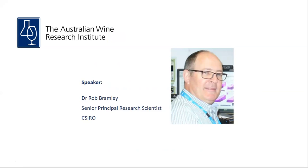Rob has worked as a soil chemist on land use sustainability issues and since 1996 has had a primary research focus on precision agriculture and the management of variability in agricultural production systems for economic and environmental benefits. Rob has been a pioneer in the development of precision viticulture for wine grape production systems, and it is a great pleasure to have him here today to present.